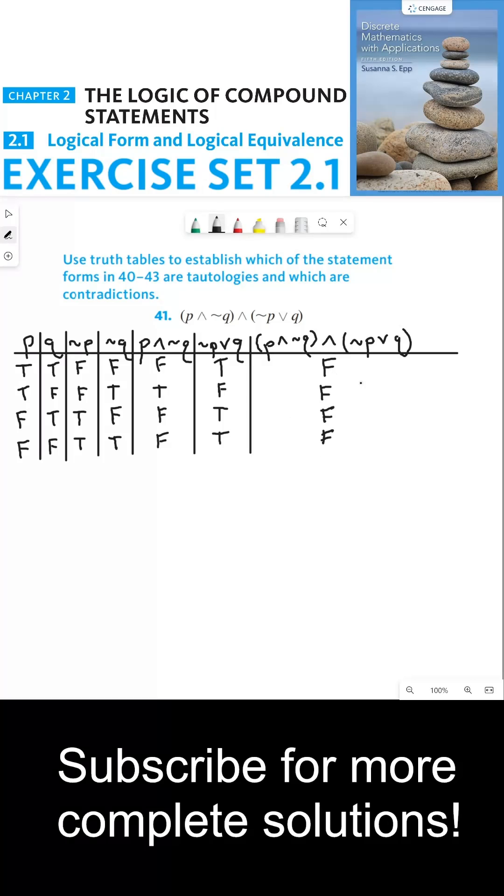As you can see from this column, all of these truth values are false. Which means that regardless of what P and Q are, the truth value of this statement form is false, and we call that a contradiction. Thanks everyone and I'll see you in the next video.